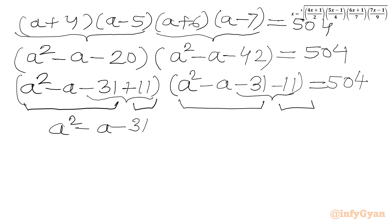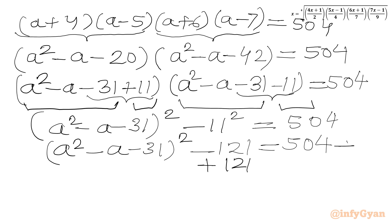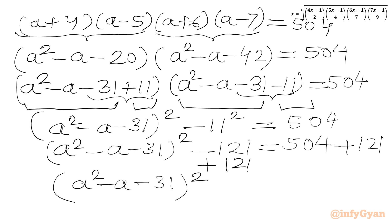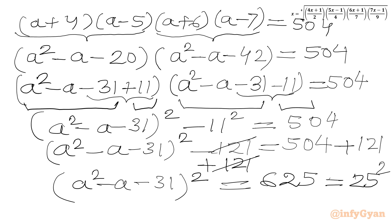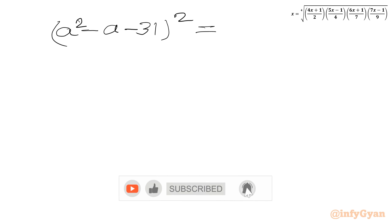Using the difference of two squares: (a²-a-31)² - 11² = 504. Adding 121 to both sides: (a²-a-31)² = 625, which is 25 squared. Taking the square root of both sides: a²-a-31 = ±25.